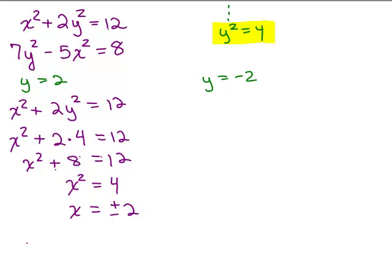So this gives me two solutions here: 2 for x, y is 2, and negative 2 for x, y is 2.